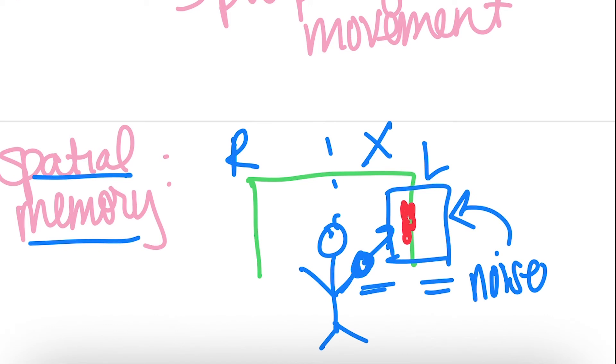So spatial memory is really important, especially with kiddos with visual impairment, because that's going to start to incorporate their ability to cognitively understand where a location is in space and how they can move their body to get to said location.